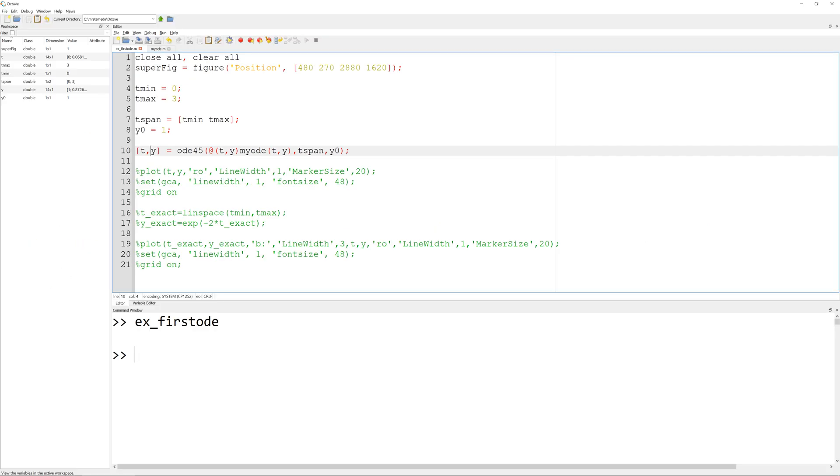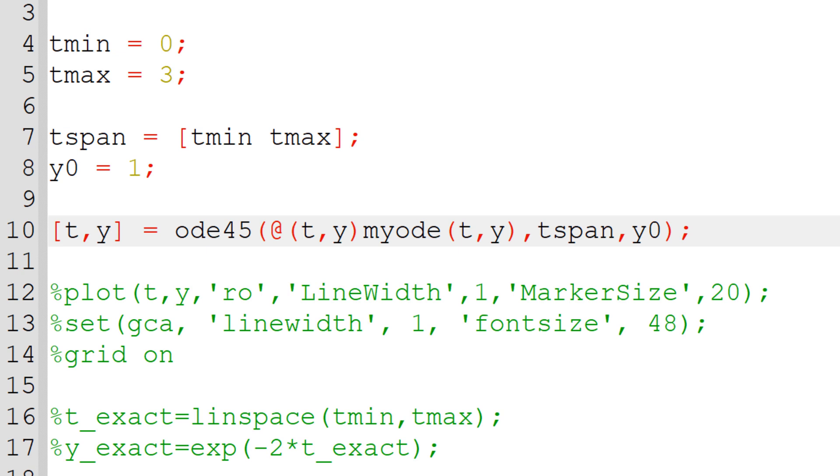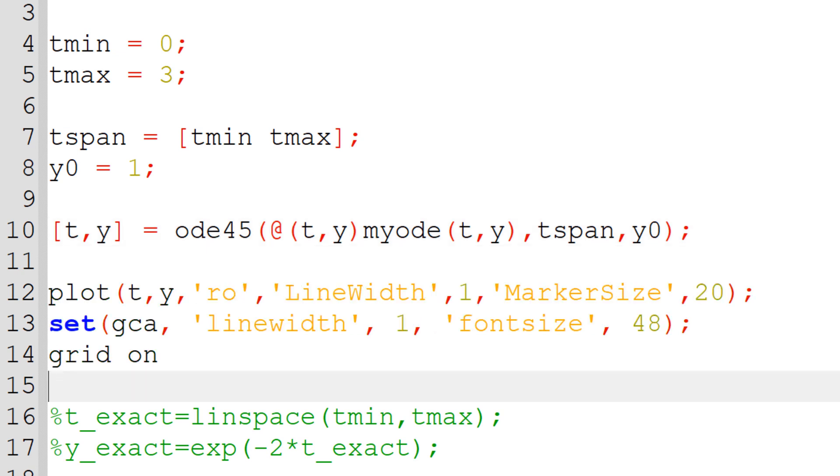When you solve the ODE, ODE45 will return the solution as a row vector for y versus t. As you can see, you find two row vectors in the variable editor. To visualize the data, you can plot using plot function. I used the red empty circle and increased the font size and added the grid.